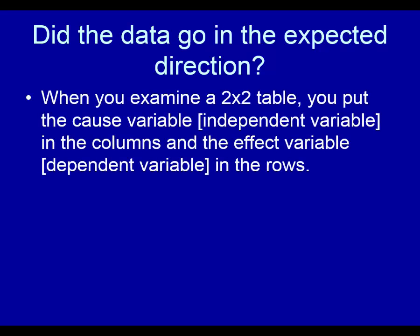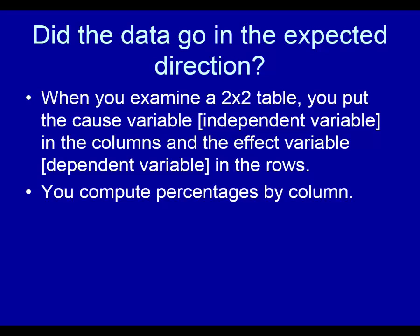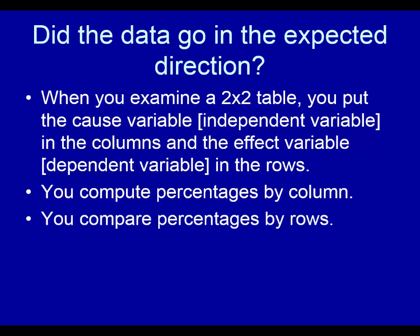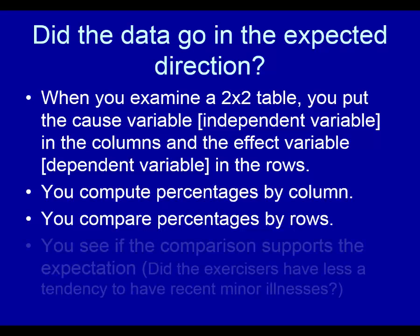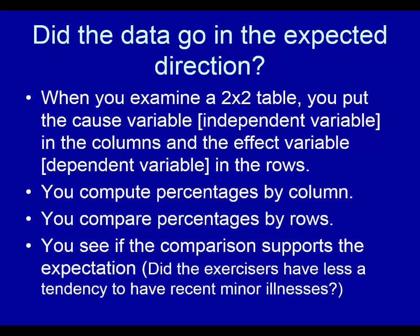Looking at it from the standpoint of whether the data went in the expected direction: when you examine a two-by-two table, you typically put the cause variable, also known as the independent variable, in the columns, and the effect variable, also known as the dependent variable, in the rows. You compute percentages by column, so each column will have percentages for each cell in that column. You compare percentages by rows — percentage down and read it across.